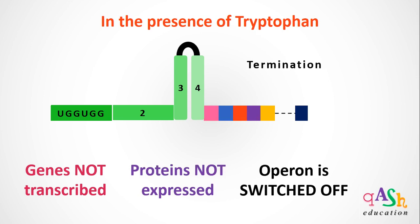This is how the tryptophan operon is regulated by the concentration of trp-tRNA. This is all for today. If you like this video, give it a thumbs up and subscribe to my channel. See you again next time. Thank you.